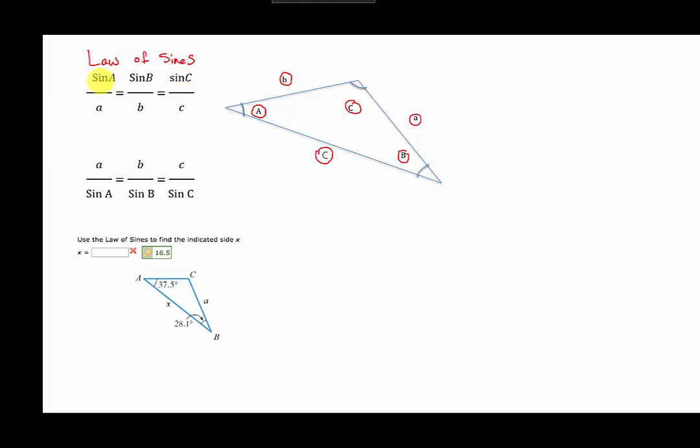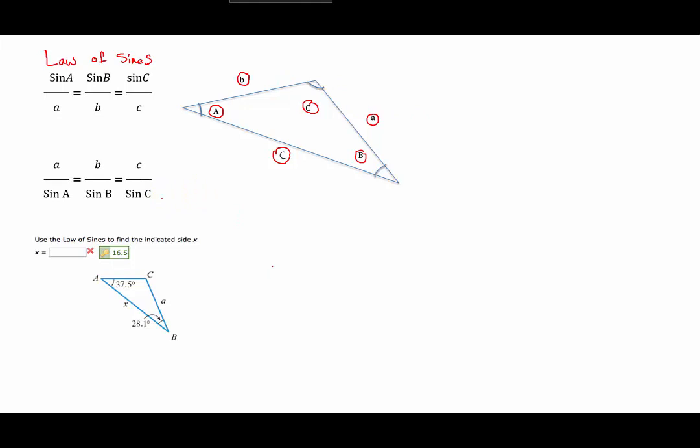We can put the sine of the angle on the top of these ratios and the sides, the opposite sides on the bottom, or we can put the sides on the top and then the sines of the corresponding angles on the bottom. Now, how is this useful? Well, this is useful whether we have a right triangle or not.